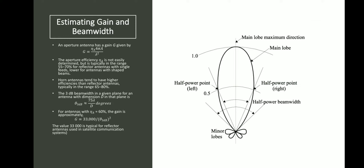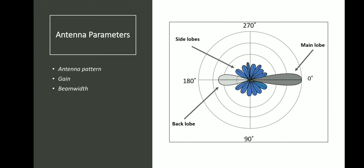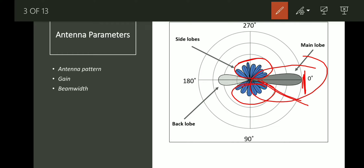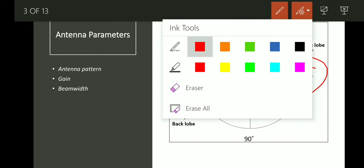As you can see, this is basically the main lobe, which gives us the maximum peak at 0 degrees. We have side lobes here — these are the side lobes which exist in the direction from this angle to this angle. We also have a back lobe which has a power that is more than the side lobes.